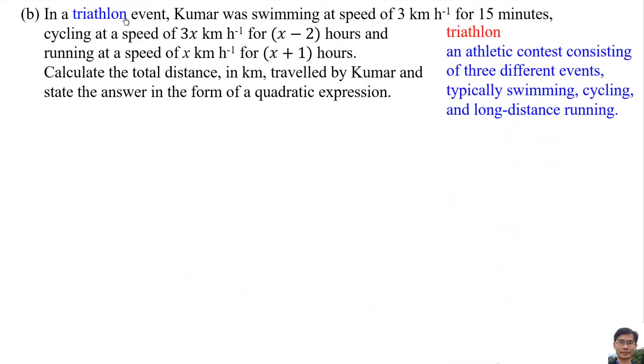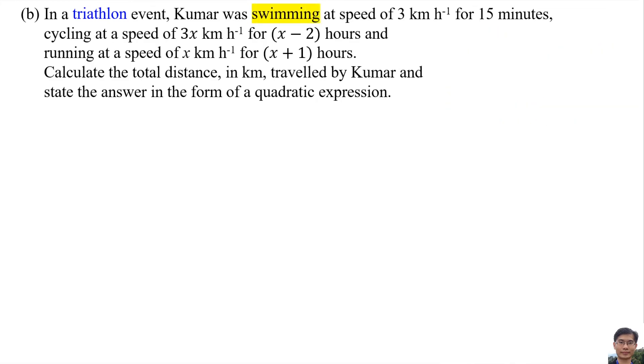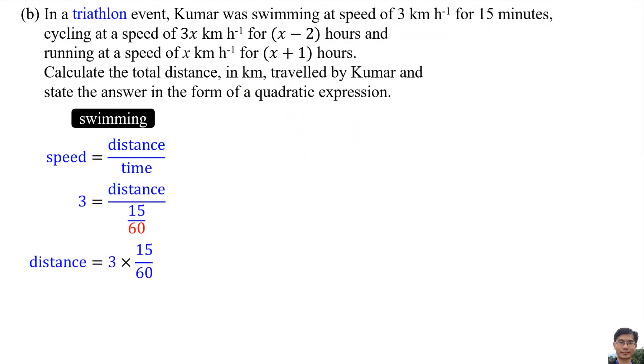Triathlon is an athletics contest consisting of three different events: typically swimming, cycling, and long distance running. The formula of speed is distance over time. The speed is 3 km per hour and the time is 15 minutes. Convert the minutes into hours by dividing by 60. So the distance of swimming is 0.75 km.